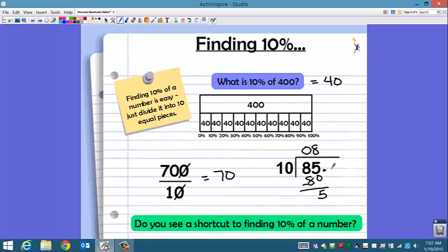But we've learned this year that we can add a decimal and a zero, and we can keep dividing until there is no more remainders. 10 goes into 50 five times. Now we have a zero remainder. Make sure you bring this decimal point straight up to your answer line. So 10% of 85 is 8 and 5 tenths.